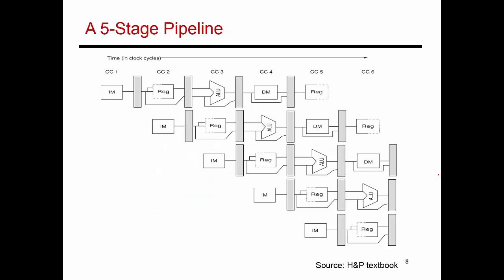This is what the pipeline looks like. An instruction in its first cycle accesses the instruction memory stage, fed by the program counter. That gets latched into latch two. Then it reads something from the register file, stores that result in latch three, which serves as input to the ALU. The result gets stored in latch four, serves as input to the data memory stage, then gets placed in latch five, and finally you write into the register file.